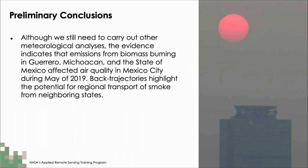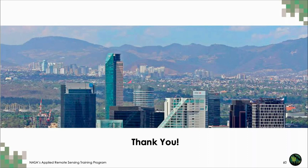Based on these results, Blanca and her team reached the following preliminary conclusion: although further meteorological analyses are still needed, the evidence indicates that emissions from biomass burning in Guerrero, Michoacan, and the State of Mexico affected air quality in Mexico City during May 2019. Back trajectories highlight the potential for regional transport of smoke from neighboring states. This is a great example of tying together burned area, land cover, hotspots, and emission data with modeled estimates of air movement to determine the source of smoke-related air quality impacts.